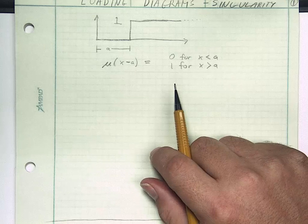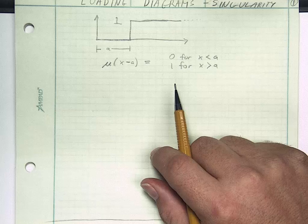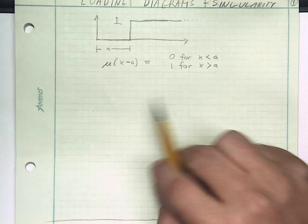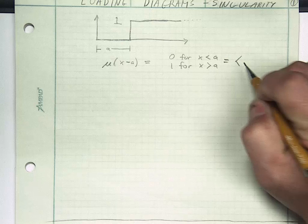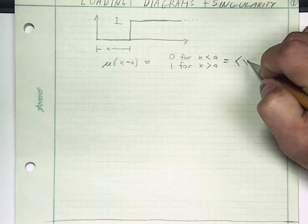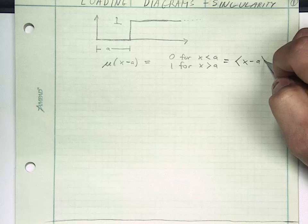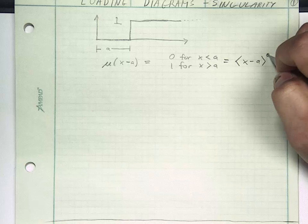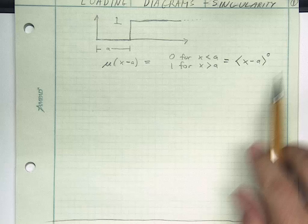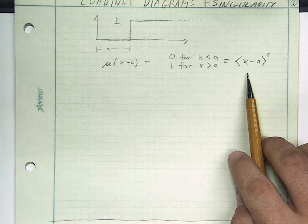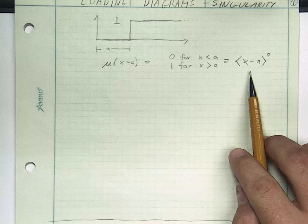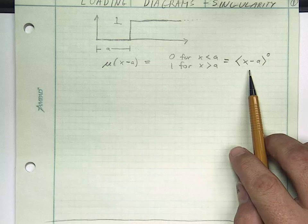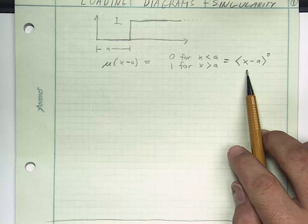What I'm going to do is introduce a new way of writing this function. Now I'm going to say that this is going to be equal to a bracket x minus a raised to the zeroth power. There's a reason we're doing this. This is going to allow us to start thinking about doing some math on this.